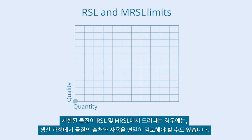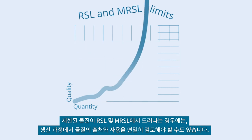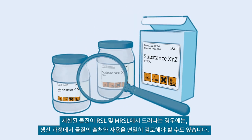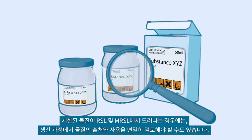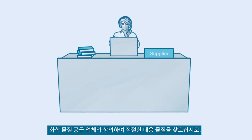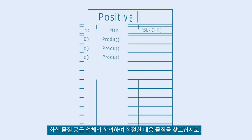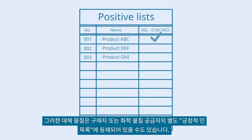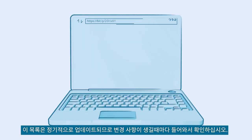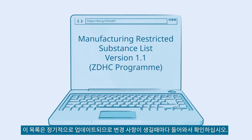An analysis of these pathways, as well as of wastewater and sludge, will help you verify conformance. In case substances are found beyond the limits on the RSL and MRSL, you may need to take a closer look at the source and use of the substance in production processes. Adjust your procurement practices and talk to your chemical suppliers to find suitable substitutes. Such substitutes may be listed on separate positive lists from buyers or chemical suppliers. Since these lists are updated regularly, make sure to stay up-to-date about any changes.